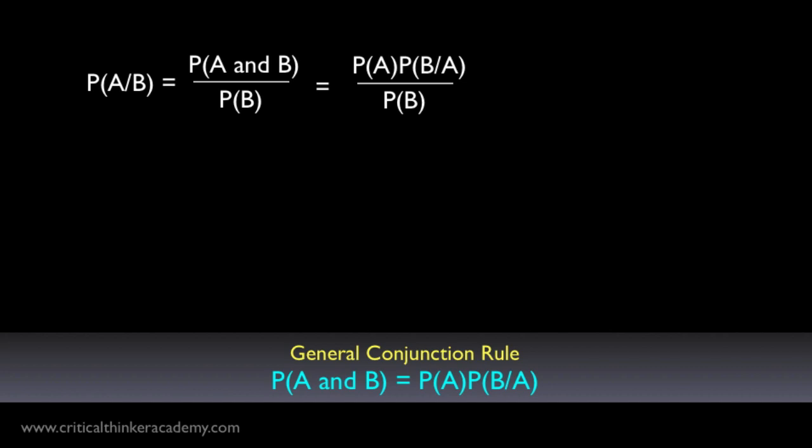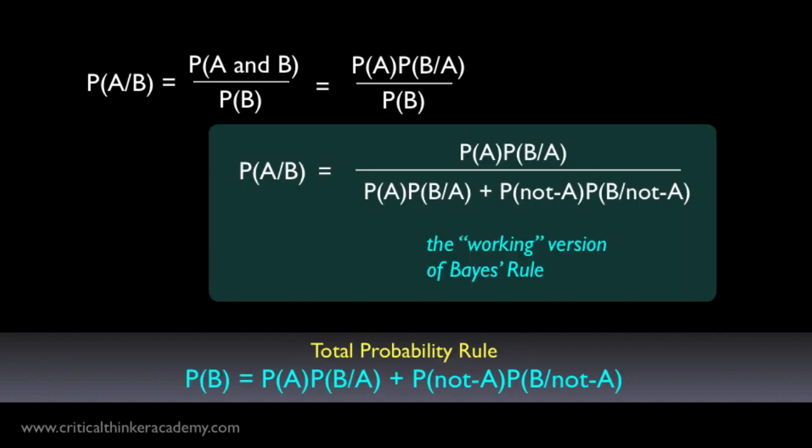What we have now is the simplest form of Bayes' Rule, but there is a more useful formulation that is more commonly used, which we get by rewriting the denominator in terms of the total probability of B. If you don't have a clue where the expression for total probability comes from, then I'd recommend watching the previous tutorial where we derived it.